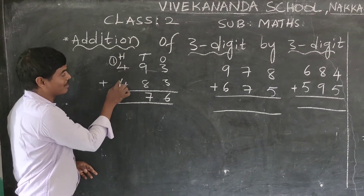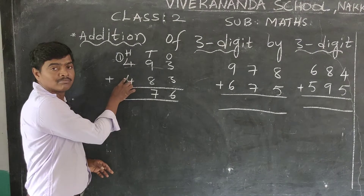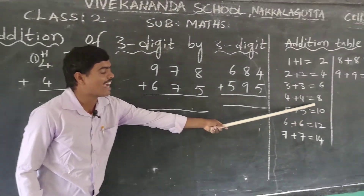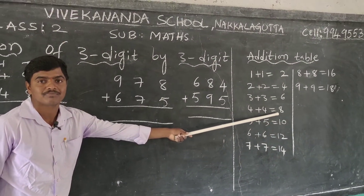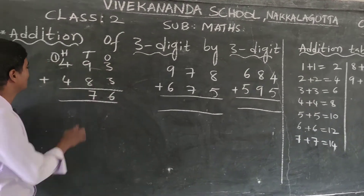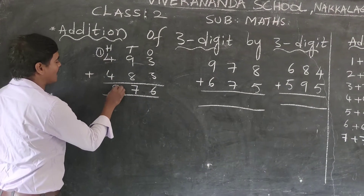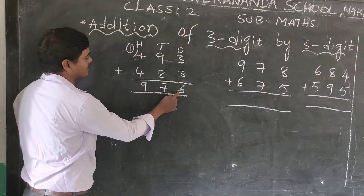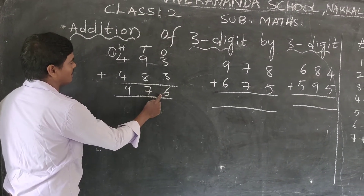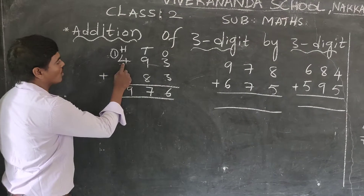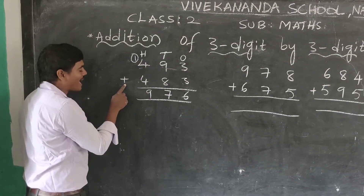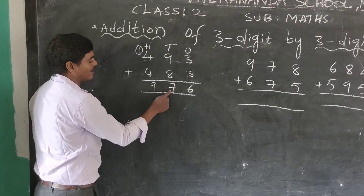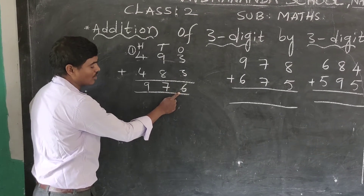Same number in the hundreds place — 4+4. Add everything together: 4+4=8, plus carry 1 equals 9. So 4+4 with carry gives 9. The answer is 976. So 493 plus 483 is equal to 976.